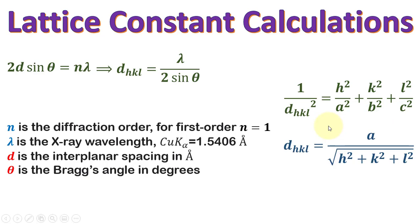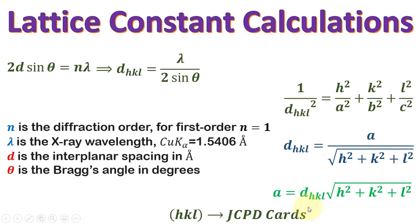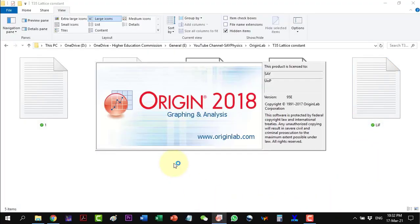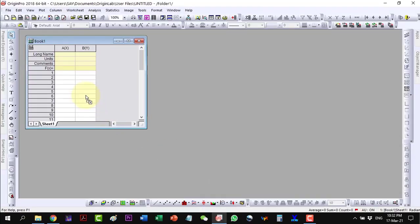For a simple cubic structure, we derived that D-HKL equals A divided by the square root of H² + K² + L², so A equals D-HKL times the square root of H² + K² + L². The D-HKL value comes from the XRD graph, while the HKL values must be taken from the JCPD cards. Now, to find the theta values, I will open Origin and plot the data for LiF.